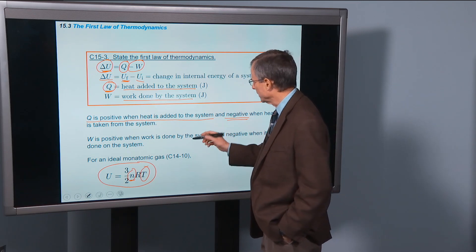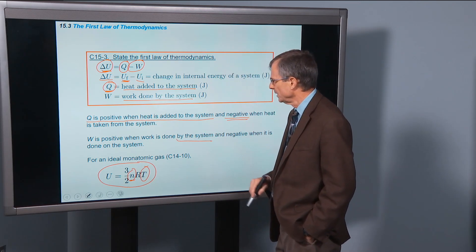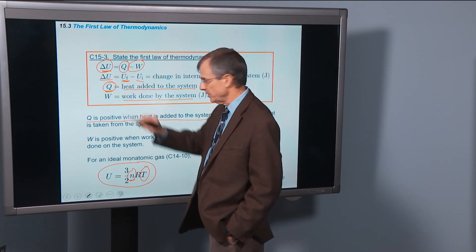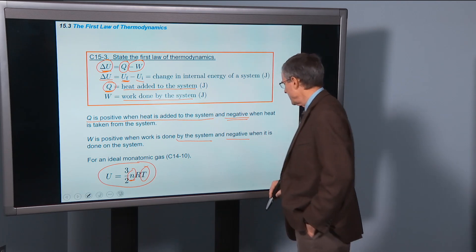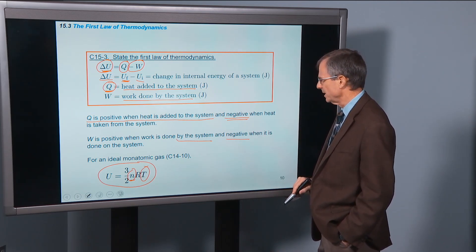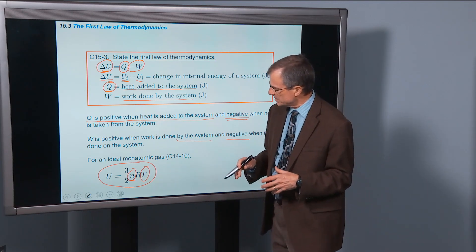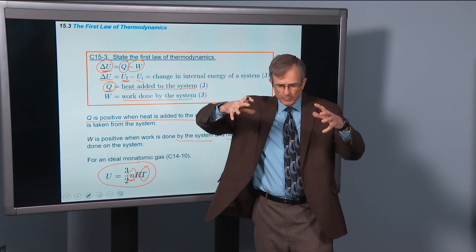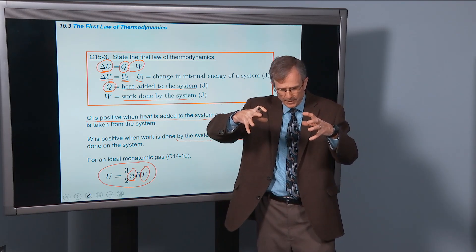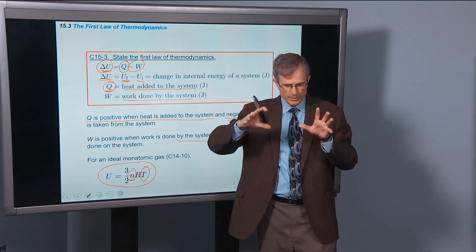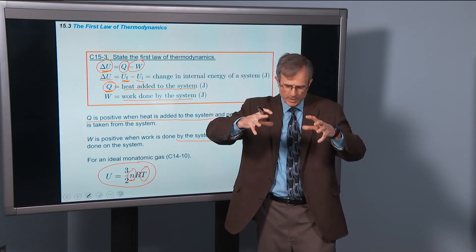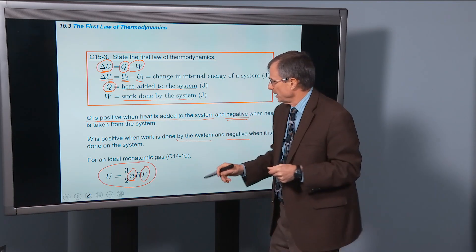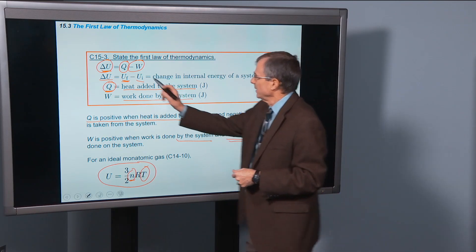So if W is a positive number, it will decrease the internal energy. And the work done is negative when work is done on the system. So that'd be the case where something outside of the balloon smashes the balloon down and decreases its volume. You take a giant with his big hands and decrease the volume of that balloon. That will increase the amount of internal energy. In this case, W will be negative.